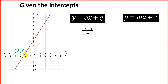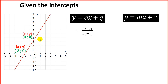We are given the intercepts. The x-intercept is minus 2, which in coordinate form is (minus 2, 0) — so minus 2 for x and y represents 0. We're also given the point 4, which is (0, 4). In coordinate form, x is 0 and y is 4.